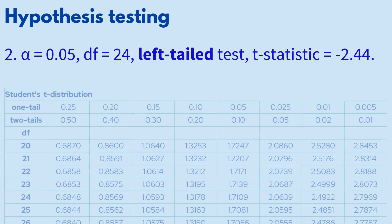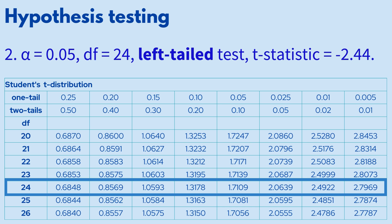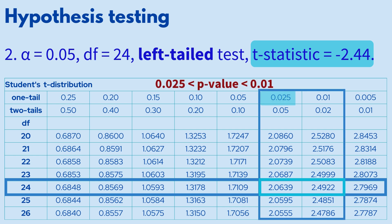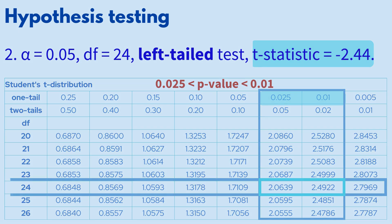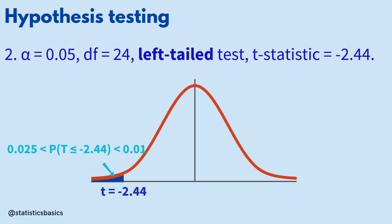To find the p-value, locate the row corresponding to 24 degrees of freedom, then identify the columns within which the test statistic of 2.44 falls. The corresponding column headings indicate the p-value range. For this one-tailed test, the p-value is between 0.025 and 0.01.